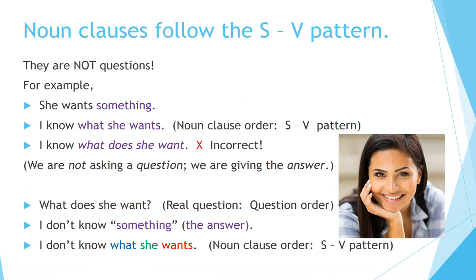Noun clauses follow the subject-verb pattern. They are not questions. For example: 'She wants something' — this is not a question. 'I know what she wants' — this follows the noun clause order, the subject-verb pattern. 'I know what does she want' — no, that's incorrect. We are not asking a question; we are giving the answer with a noun clause. 'What does she want?' — that's a real question, it follows the question word order. 'I don't know the answer' — the answer is something I don't know. 'I don't know what she wants' — that follows the noun clause order.